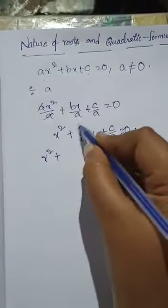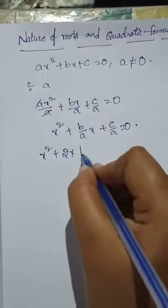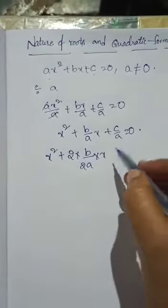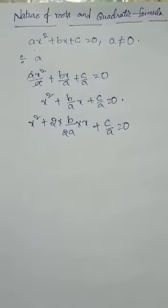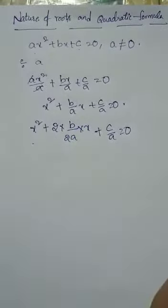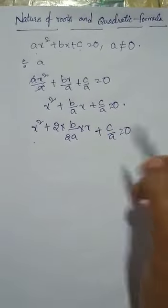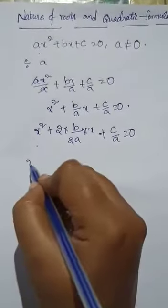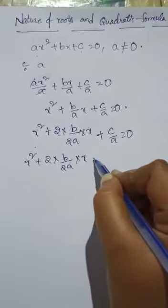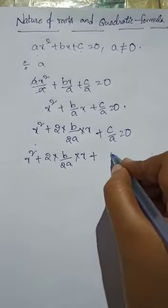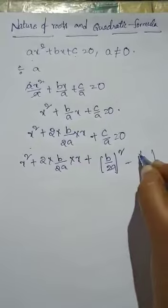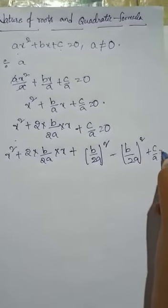Here, B/A can be written as 2 × (B/2A) × x — the 2s cancel to give B/A. So we have x² + 2·(B/2A)·x + C/A. We don't have an A² term yet, so we add and subtract (B/2A)², giving: x² + 2·(B/2A)·x + (B/2A)² − (B/2A)² + C/A = 0.